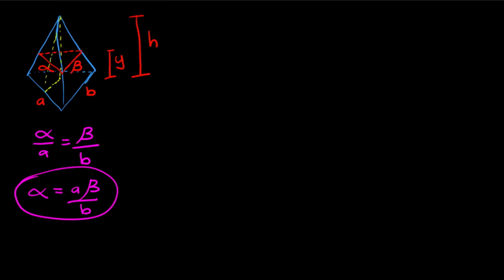Using similar triangles again, we can see that H over B—the total height over this side—is proportional to H minus Y over beta. That's the height from the tip to our triangle. From this, beta equals B times H minus Y over H.